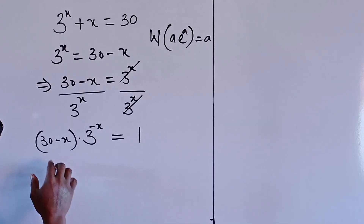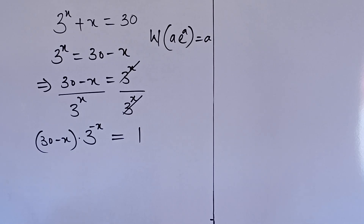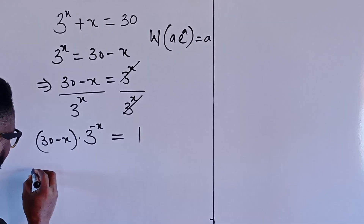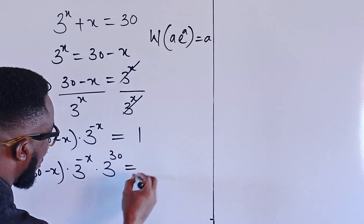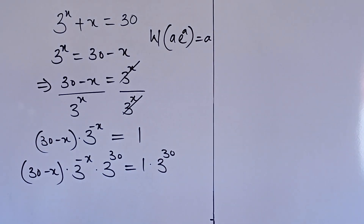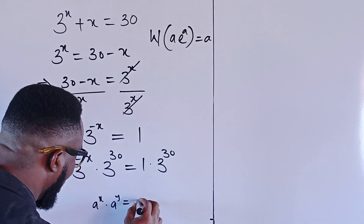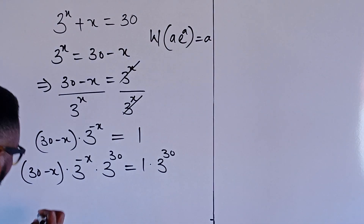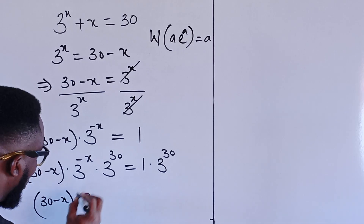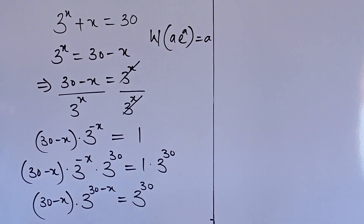To ensure parity — for the exponent to have the same value as the coefficient — we need to multiply both sides by 3 to the power of 30. We get 30 minus x times 3 to the negative x times 3 to the power of 30, equal to 1 times 3 to the power of 30. Using the product rule of exponents, a to the x times a to the y equals a to the x plus y, so this gives us 30 minus x times 3 to the power of 30 minus x, equal to 3 to the power of 30. We are achieving symmetricity on the left-hand side.